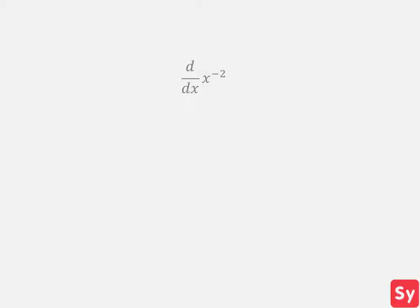Second example, we want to compute the derivative of x to the negative 2. We recall the power rule to compute this derivative. This equals negative 2 times x to the negative 2 minus 1. We simplify this to be negative 2 times x to the negative 3.